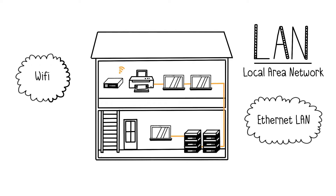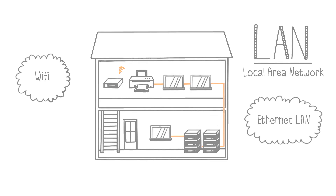A classic example of a LAN is an office's local network, where multiple work computers share file servers and network printers. The most popular type of LAN is Ethernet LAN, distinguished by its wired connection method using twisted pair cables for reliable and high-speed data transmission within a confined geographical area. There's also a wireless variant, the wireless LAN, mainly based on radio wave transmission and commonly known as Wi-Fi.